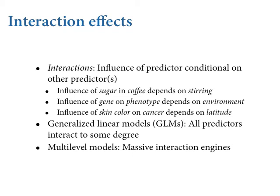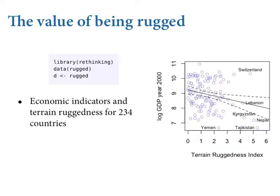We're going to master interactions in the context of ordinary linear models with Gaussian likelihoods. When we get to generalized linear models in a couple of weeks, everything will necessarily interact even without explicit interaction terms, because of ceiling and floor effects. And multi-level models get part of their power from being essentially massive interaction engines — interacting every parameter with the identity of the entity it comes from. I gave interactions a whole chapter because lots of professional scientists never got a good education in interaction effects and make mistakes as a consequence.